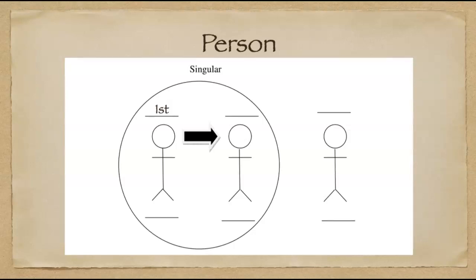Now person has to do with who is doing the speaking in the conversation. In this diagram right here, this circle represents a conversation that is going on right now. This fella is the speaker, this person is the listener, and then this person is outside the conversation. They're not speaking, listening, or a part of anything going on.